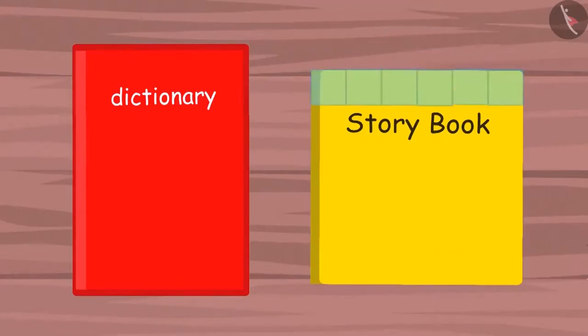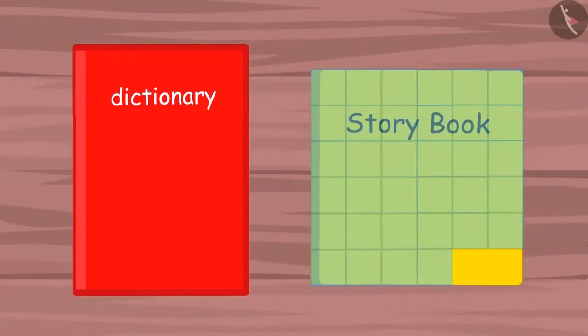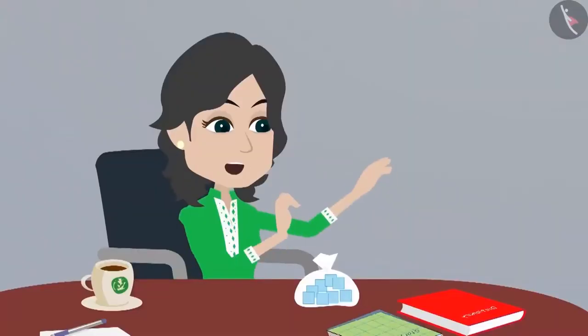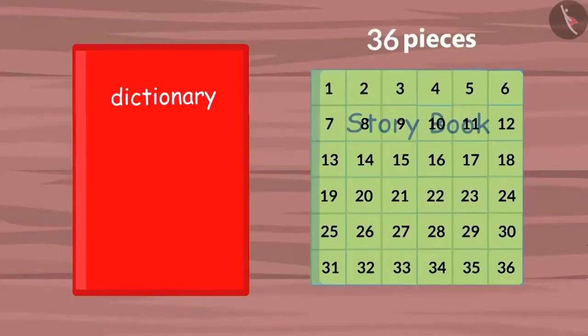Now we place the square shaped plastic pieces on top of this book in such a way that there are no gaps between the pieces. Madam, the book is completely covered with square shaped pieces. But how do we know the measurement?